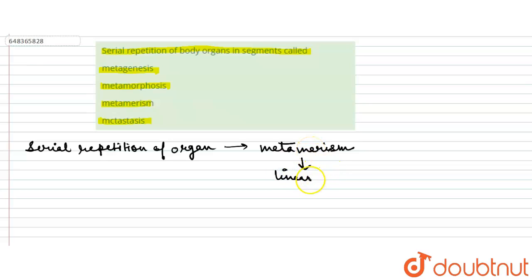A linear series of body segments that are fundamentally similar in structure. It is mainly seen in Annelida phylum.